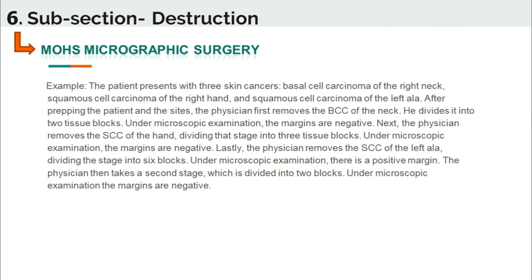For example: a patient presents with three skin cancers — one on the right neck, one on the right hand, and one on the left nasal ala. The physician prepped, draped, and anesthetized the patient. He removed the lesion on the neck and divided it into two tissue blocks, with negative results under microscopic examination. The hand was also negative, with three tissue blocks. For the nasal ala, he removed the tissue, divided the stage into six blocks, but found a positive result, so he proceeded to a second stage, dividing the tissue into two blocks, and the margins were negative.